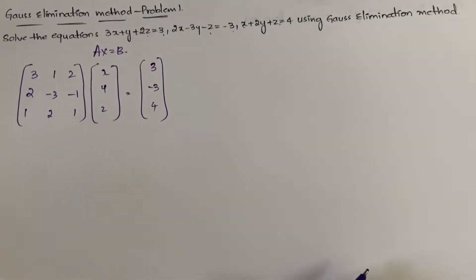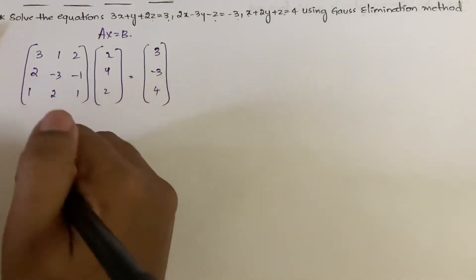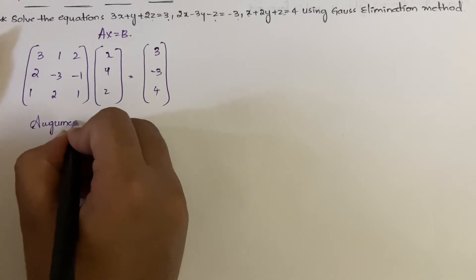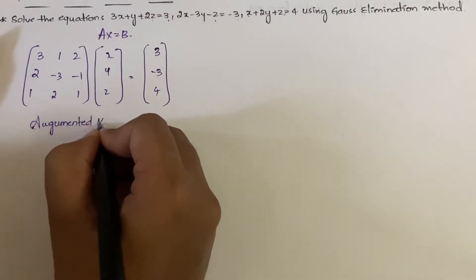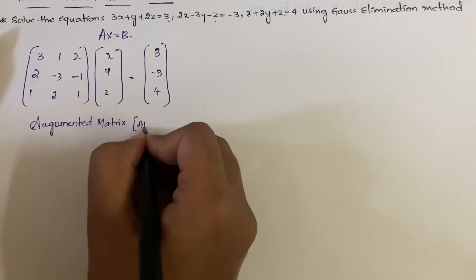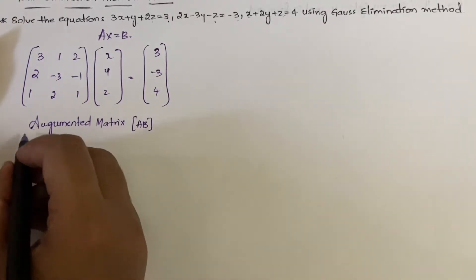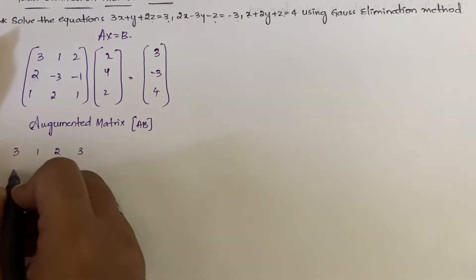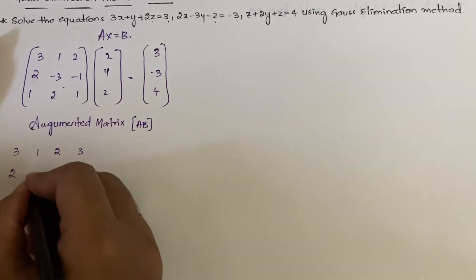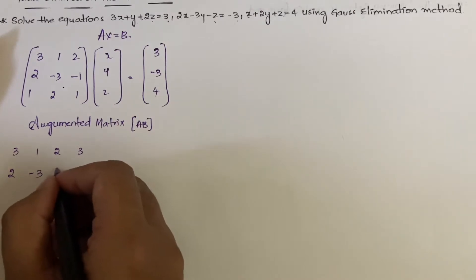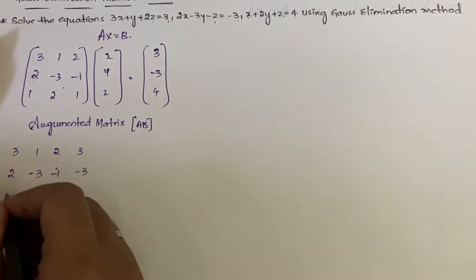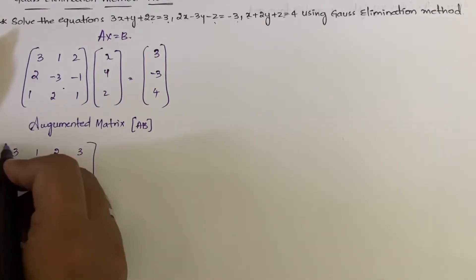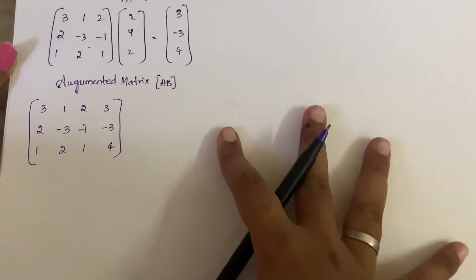Once we have written Ax = b, the next step is to write the augmented matrix [A|b]. The augmented matrix combines A and b together: [3, 1, 2 | 3; 2, -3, -1 | -3; 1, 2, 1 | 4]. We have written the augmented matrix.